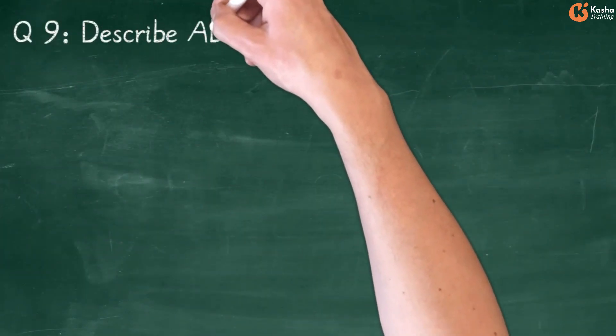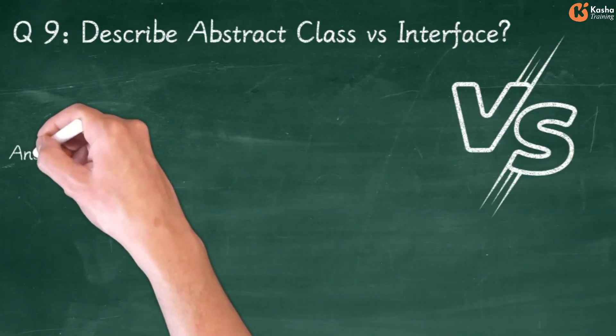Question 9: Describe Abstract Class versus Interface.